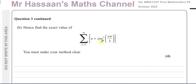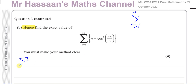Now part B says 'hence' — meaning using our answer from part A — find the exact value of this sum in sigma notation. This means the sum from n equals 1 up to 50 of all the terms generated from the sequence n plus cosine squared of n pi over 3, adding each term as n goes from 1 to 50.